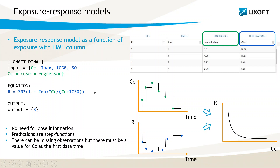Models from the PD library follow this template. In this configuration, only the response versus time appears in the plots of Monolix, not the concentration versus time. Regressors are used as piecewise constants, following a last-carried-forward interpolation. So the concentration is assumed constant following the last given value read from the data, until the next value.